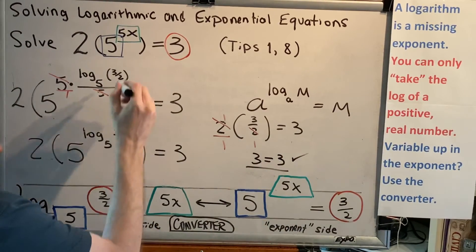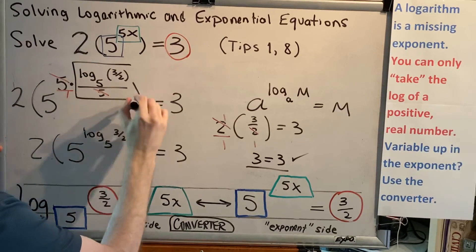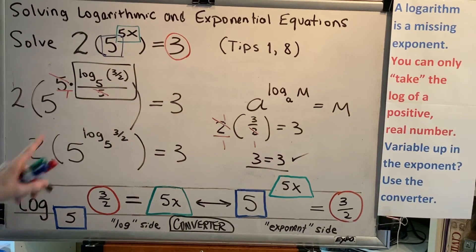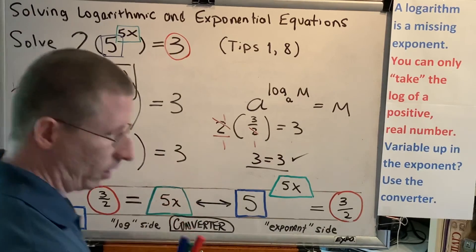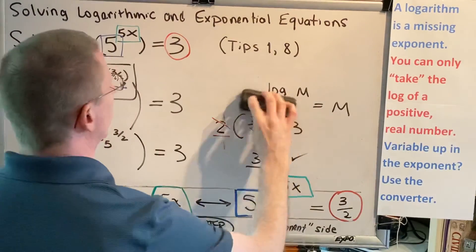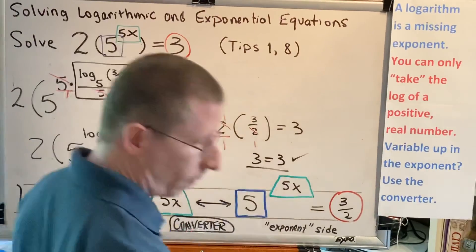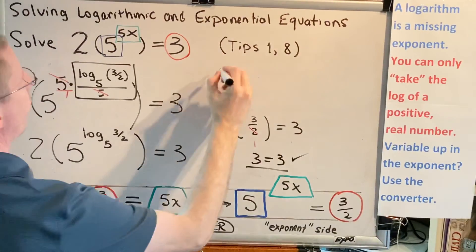So our final answer to this problem is here: log base 5 of 3 halves all divided by 5. Let me clear a little space to write that clearly. We have confirmed our final answer. x equals log base 5 of 3 halves all divided by 5.